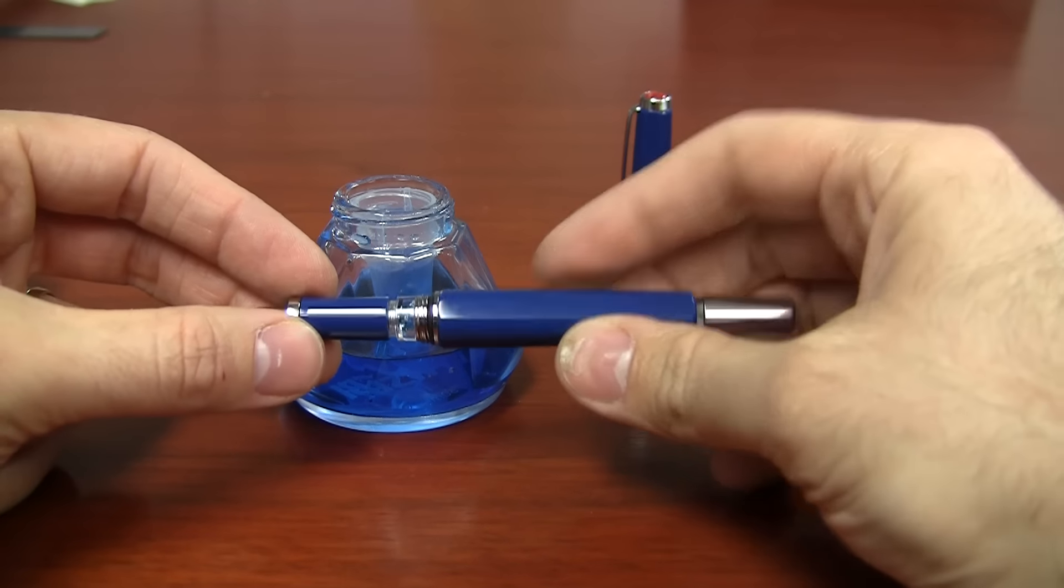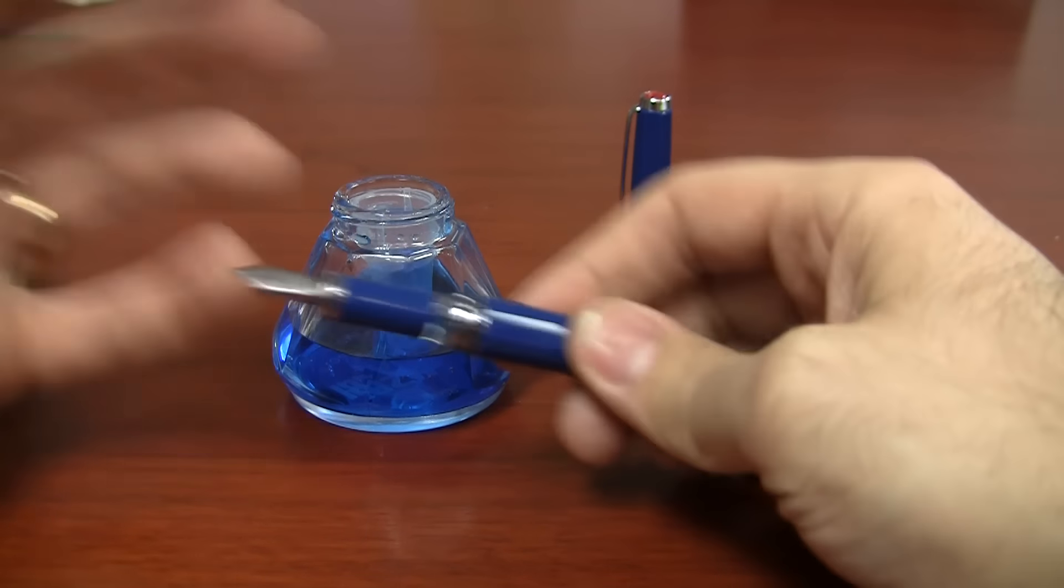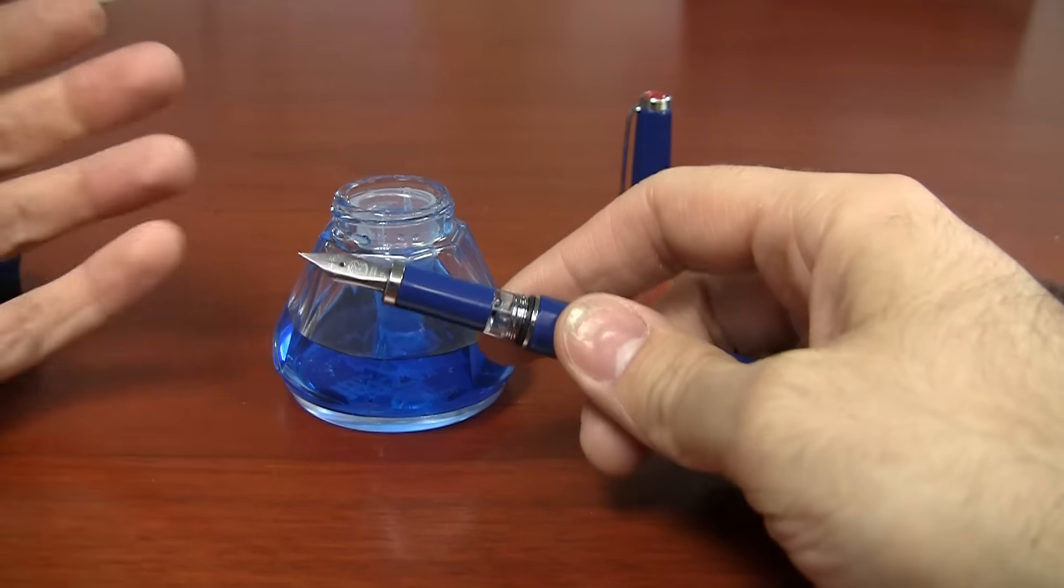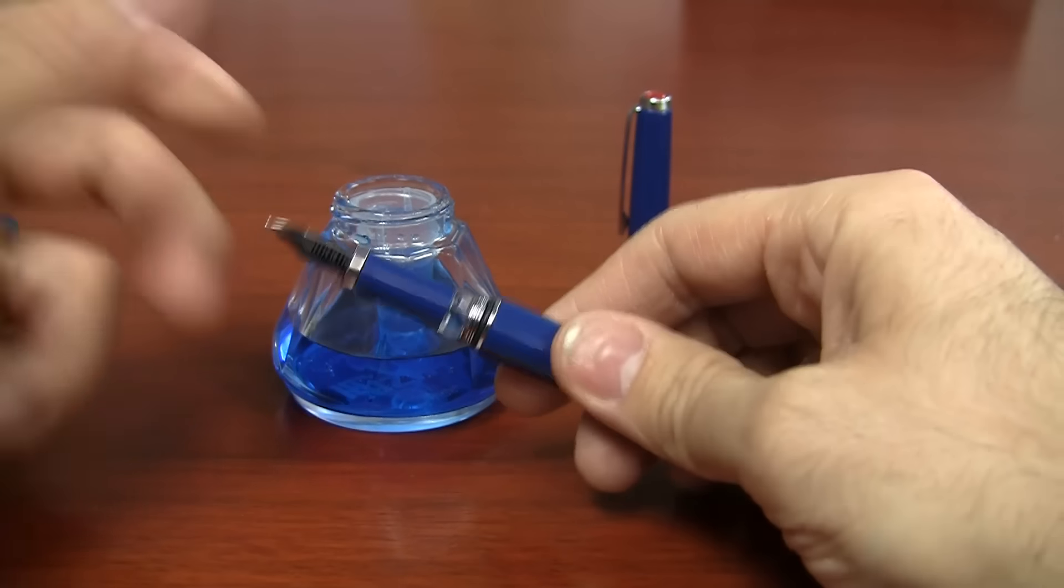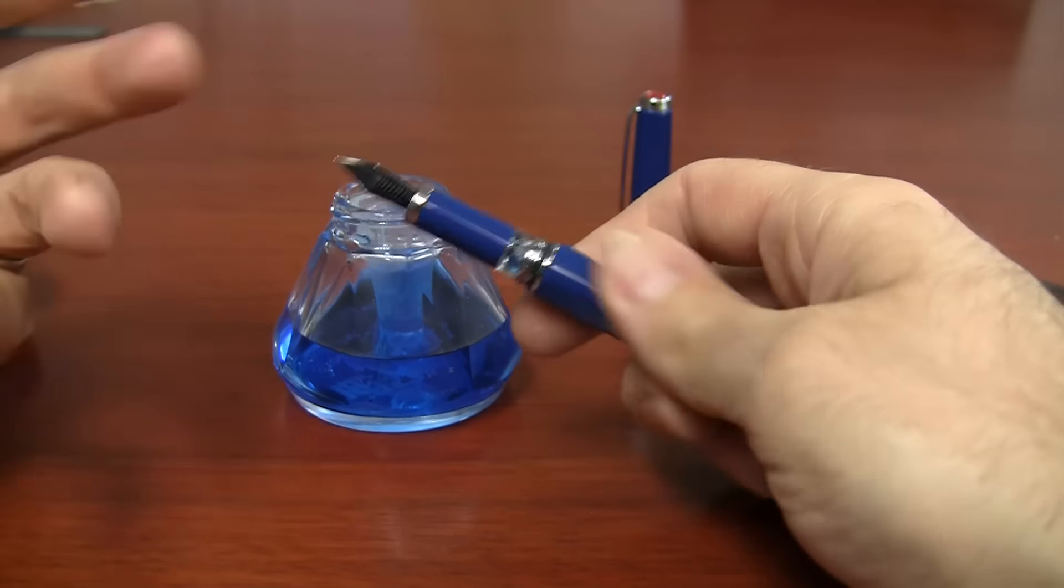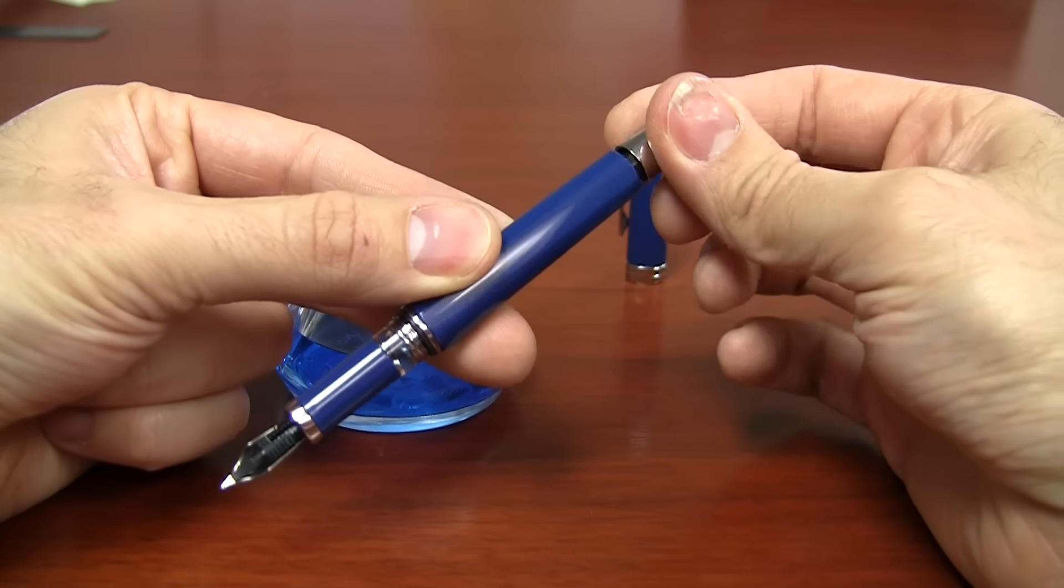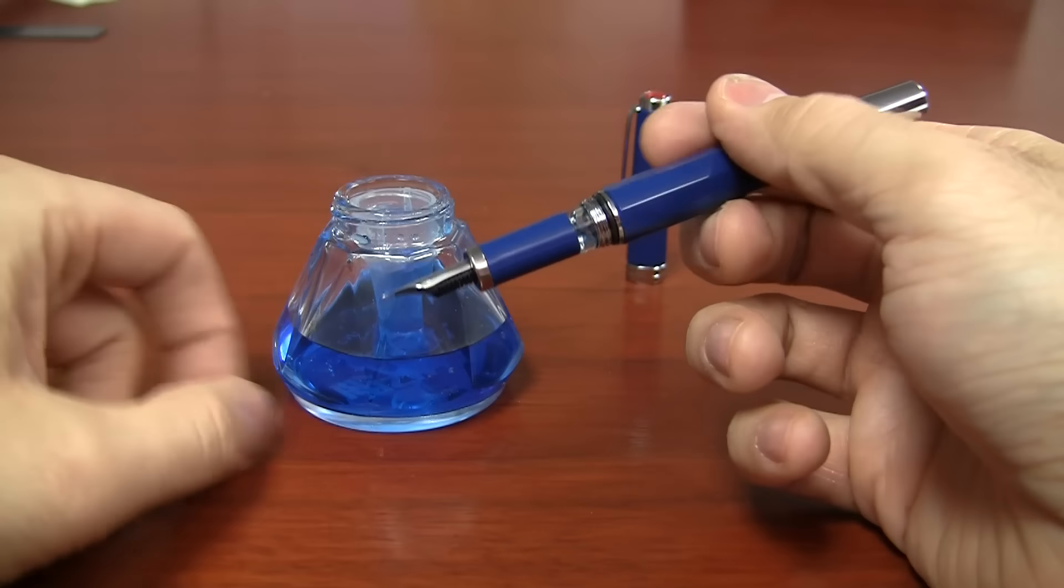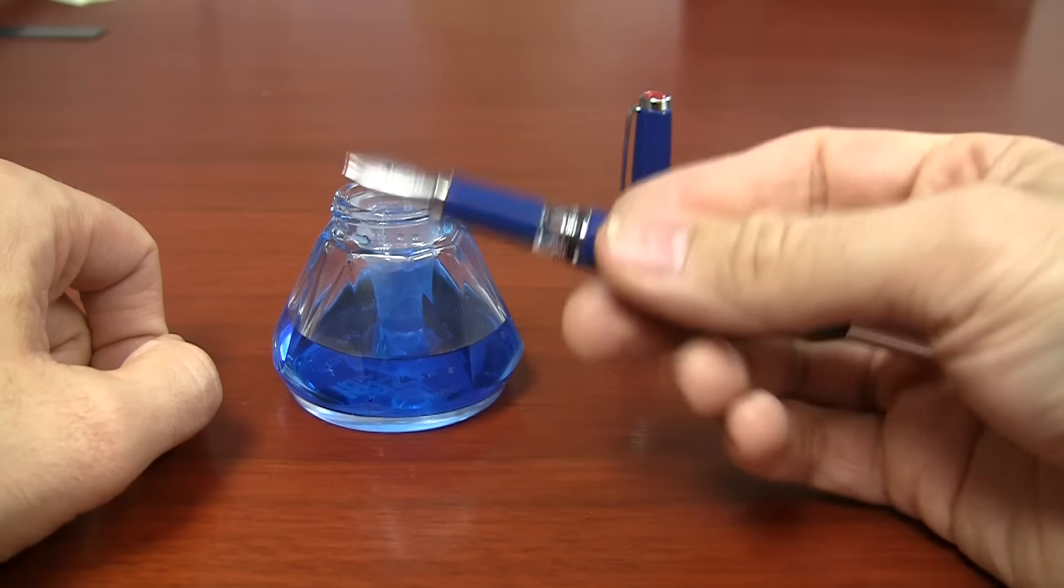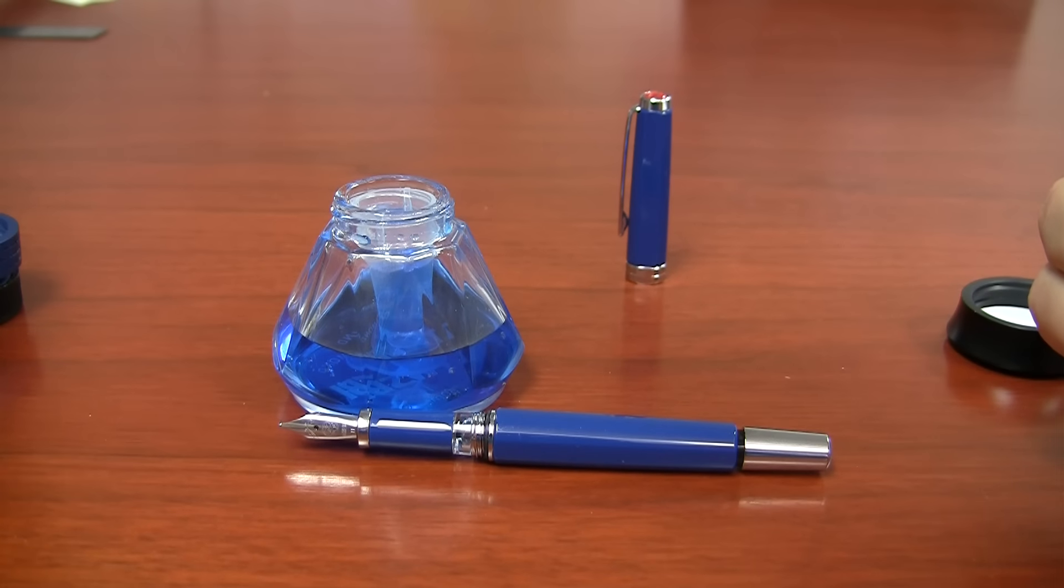But once you have the thing inked up, all you got to do is screw the nib section back on. You don't have ink all over your grip section. You don't have ink all over your nib. You can go about and write it. The only thing is if you're filling the pen for the first time or after a fresh cleaning, you may just want to expel just a little bit down through the feed to kind of get the thing primed up so that you can be ready to write. Otherwise, that is how you fill TWSBI Classic from the Diamond 50 inkwell.